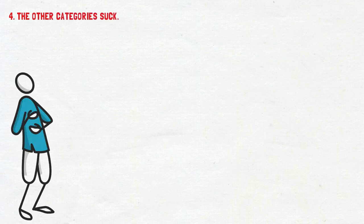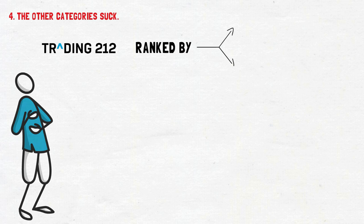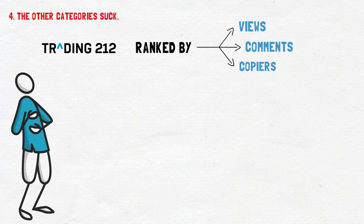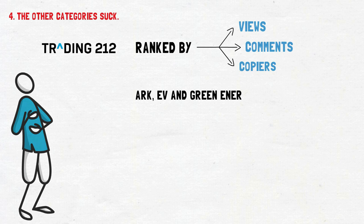Point 4: the other categories suck. Originally Pies were all on one feed, completely unorganised, ranked by views, comments, and copiers. It became very messy, so Trading 212 came out with categories — and it seemed like they were never updated since. Now you get categories like ARK, EV, and Green Energy, which are basically redundant now, based on the Pies that Trading 212 had at the time rather than what they should be organised into.